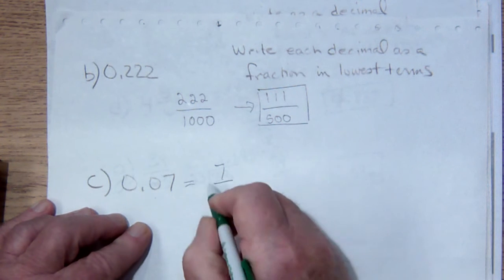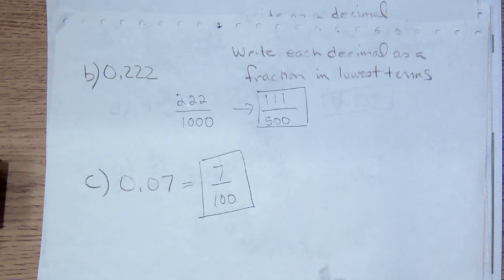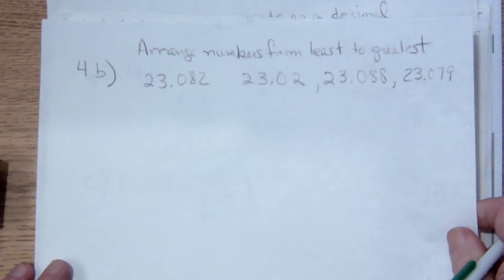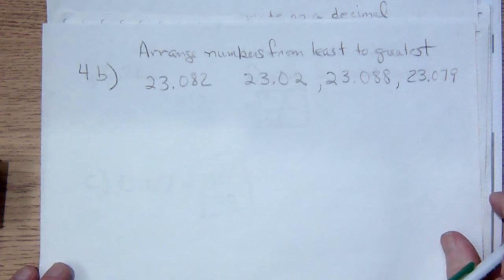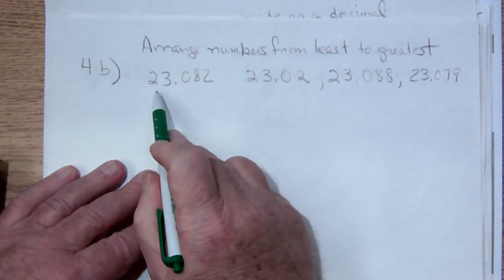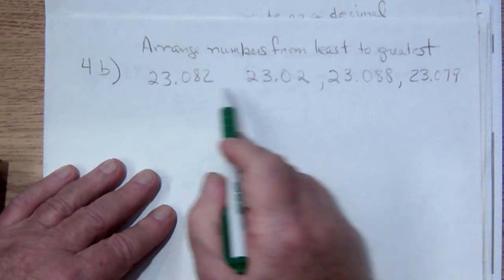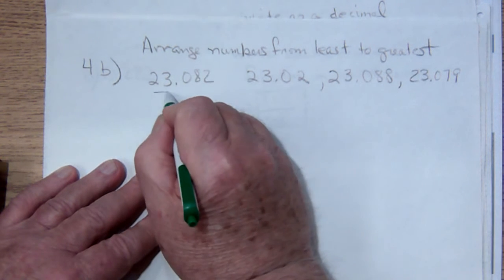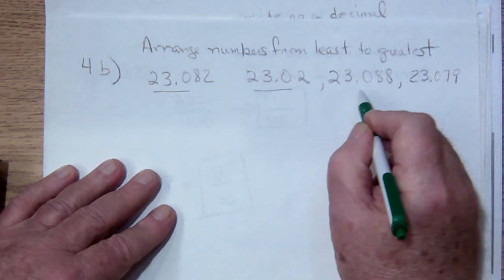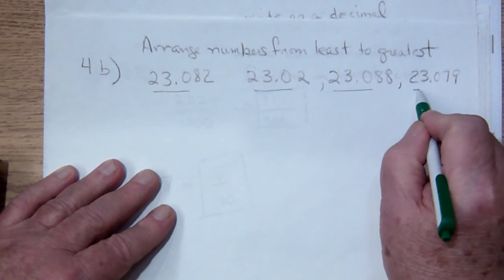The last suite of problems deals with arranging numbers from least to greatest. Now all of these have 23, and all of them have 0.0, so these are the same, that is the same as that, is the same as that, is the same as that.